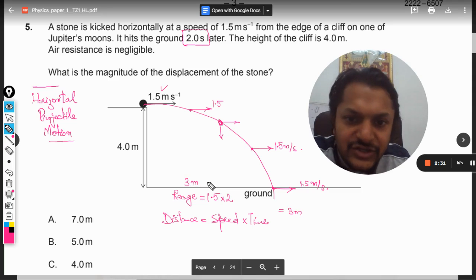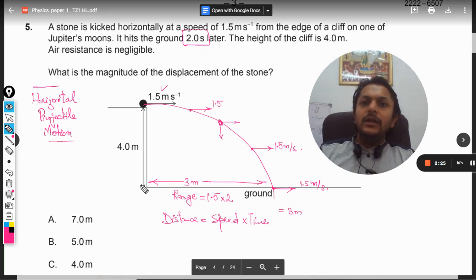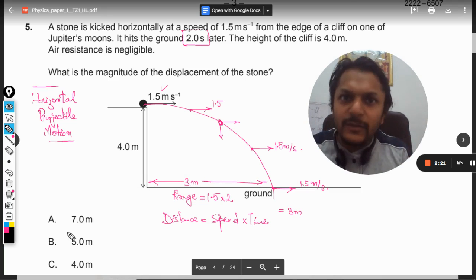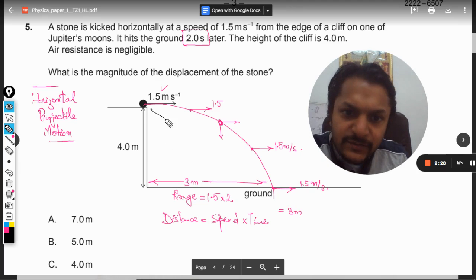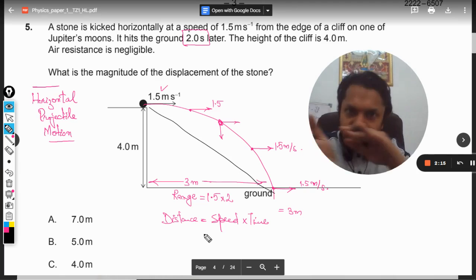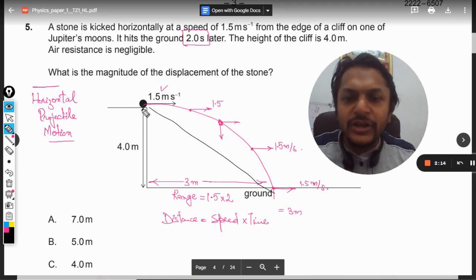Now the question says you are supposed to find the displacement. What is the displacement? Displacement will be this, like this. This will be the displacement - the line joining the initial position and the final position is the displacement.